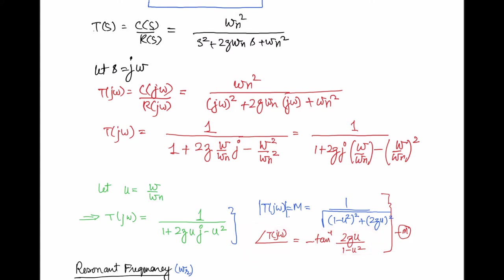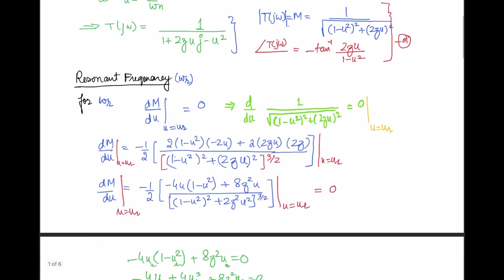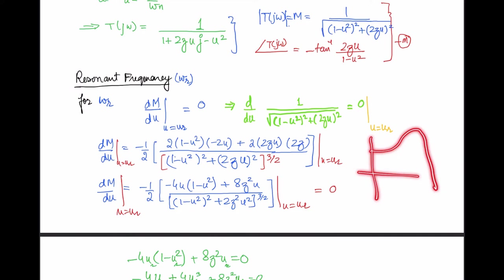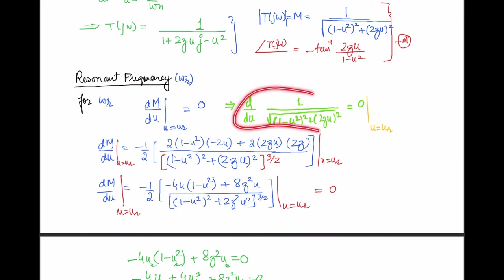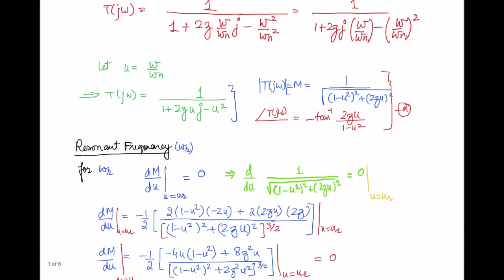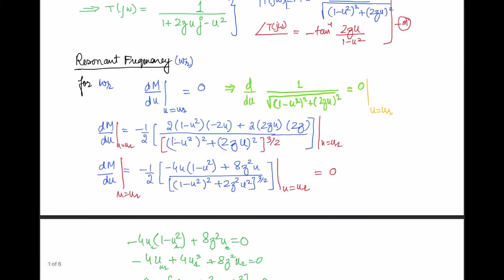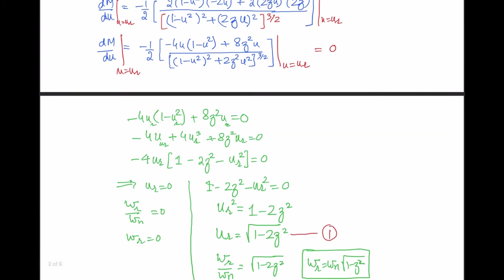To determine the resonant frequency, we note that in the frequency response of the second order system a resonant peak occurs at a certain frequency where the slope of the tangent is zero. We take the derivative of the magnitude with respect to u and set it equal to zero; the frequency at which the slope becomes zero is the resonant frequency, where u equals ur.